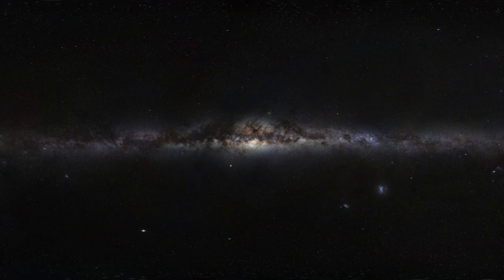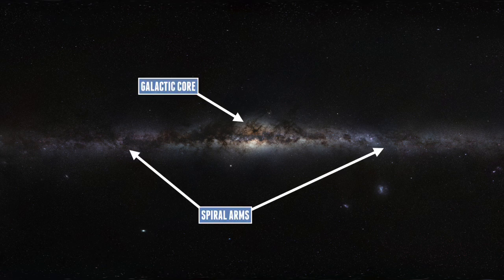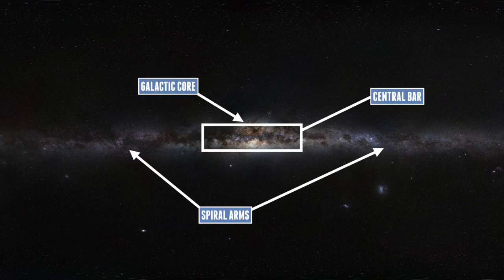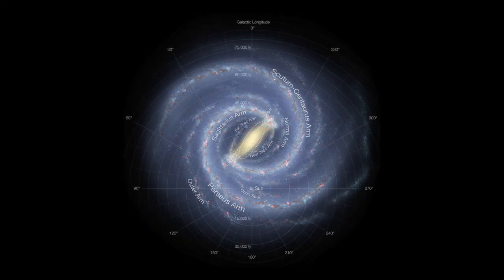From what we know, the Milky Way is a barred spiral galaxy. This basically means that the galaxy is in a spiral shape and it has a central bar running through the centre. By knowing these parameters, we can make an estimated calculation on the mass of the galaxy, and then estimate how much of this mass is made up of just stars.